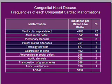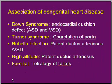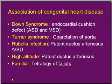Our next topic is the association of congenital heart disease, which is getting a lot of importance. Down syndrome patients, that is trisomy 21, most frequently suffer from a congenital heart disease or a hole in the heart. This is primarily due to a defect in the endocardial cushion, which plays an important role in the formation of ASD and VSD. So patients with Down syndrome have a higher chance of having ASD or VSD.